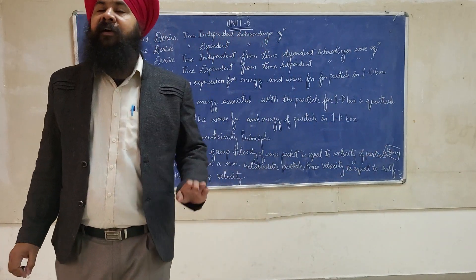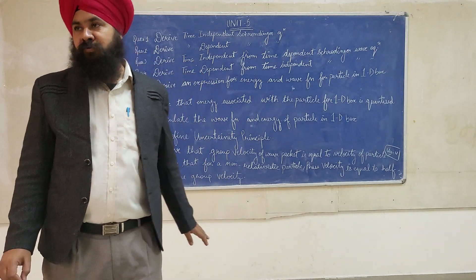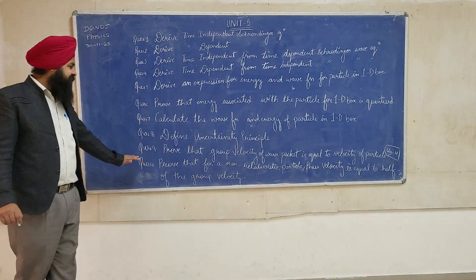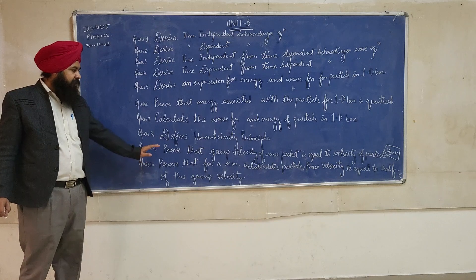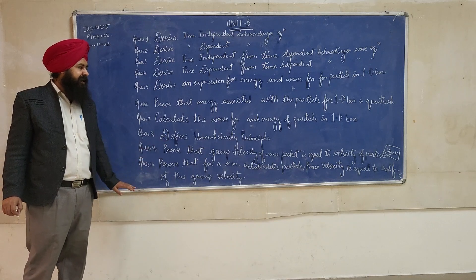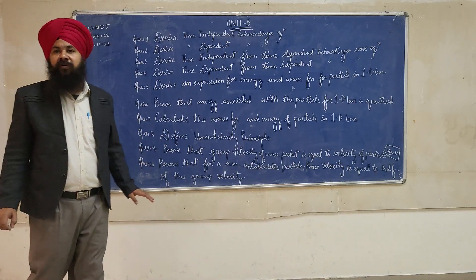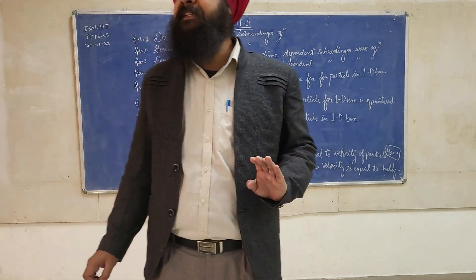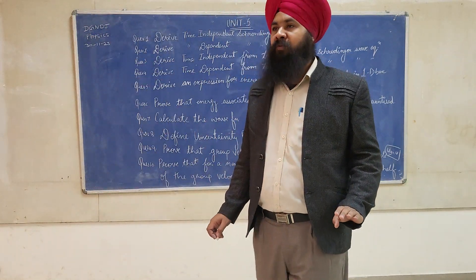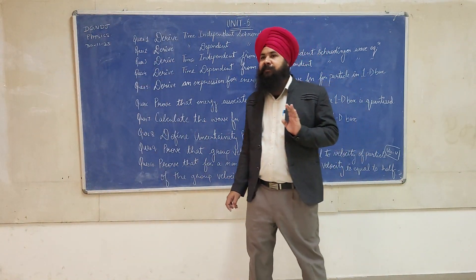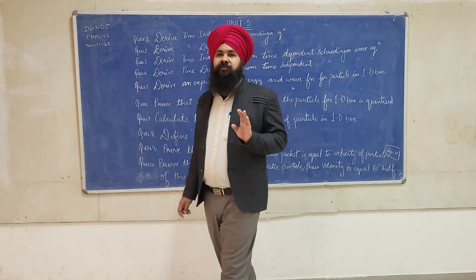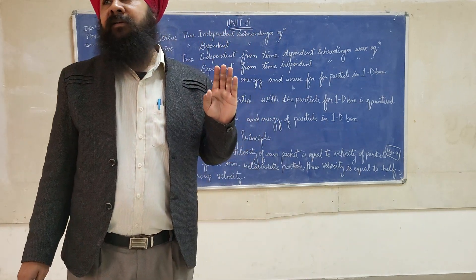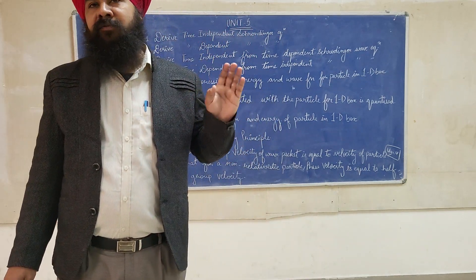The last but not least question is: prove that for a non-relativistic particle, phase velocity is equal to half of the group velocity — that is, Vp is equal to Vg divided by 2. That is all about the important questions of Unit 5. Thank you so much.